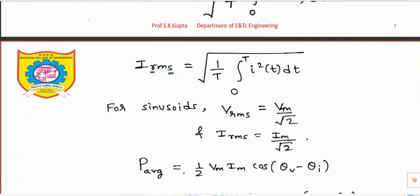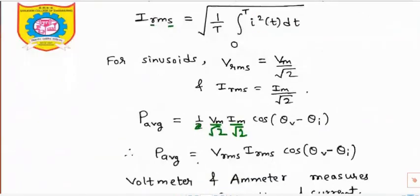We know the average power formula: P = (1/2) × Vm × Im × cos(θv − θi). These two terms can be written as √2 × √2, meaning Vm / √2 is nothing but V_RMS, and Im / √2 is nothing but I_RMS. So the average power formula becomes: P = V_RMS × I_RMS × cos(θv − θi). This is how average power can be defined using RMS values.